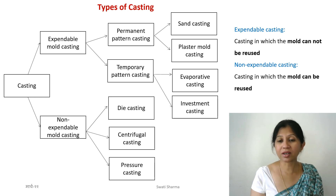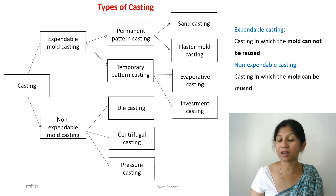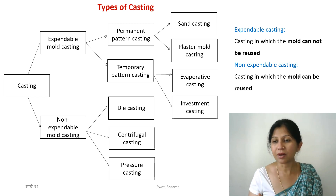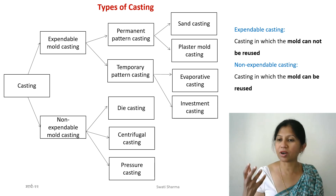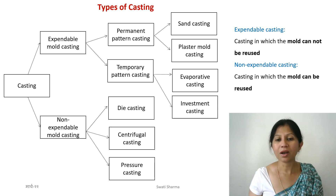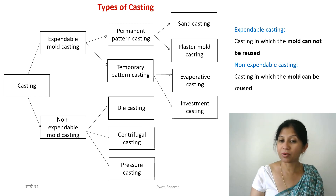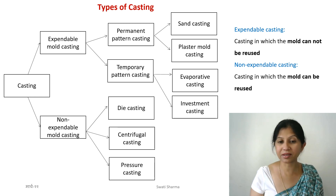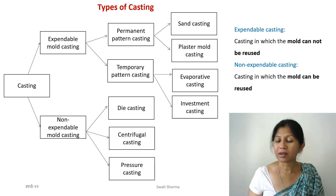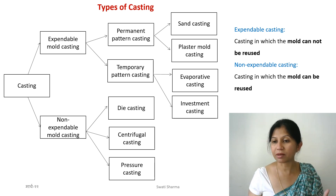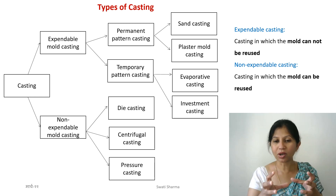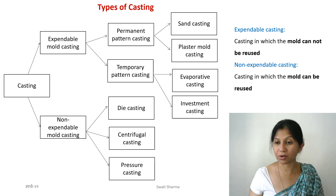There is also pressure casting, often known as low pressure casting. In die casting you inject the material with high pressure, but low pressure casting is used for lower temperature materials — for example, non-ferrous metals such as aluminum. The idea is the same: you inject or pour the metal at relatively low pressure into the mold, it takes the shape, solidifies, and comes out.